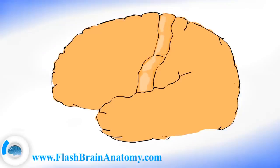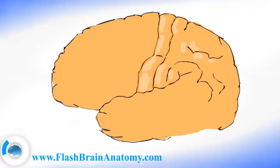I will continue now with explaining the other gyri and sulci on the lateral brain surface. We have the intraparietal sulcus here. Then we have the supramarginal gyrus — that's this gyrus over here. And then we also have the angular gyrus, which is this gyrus over here.